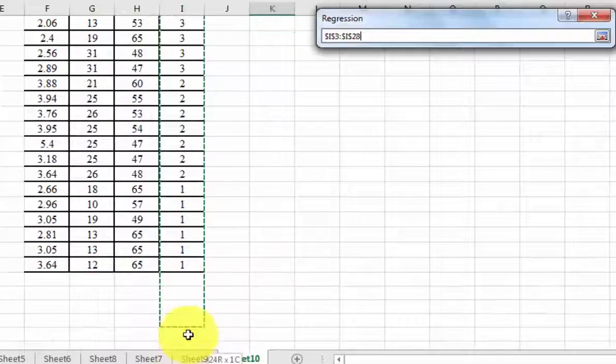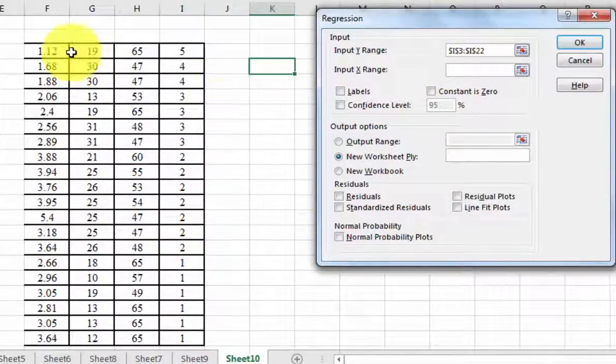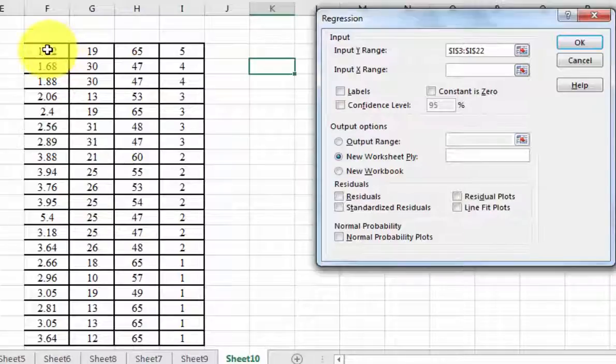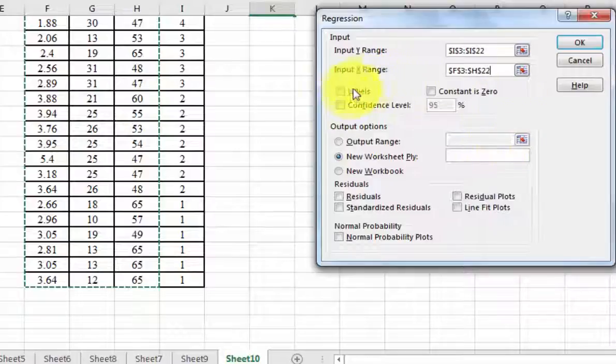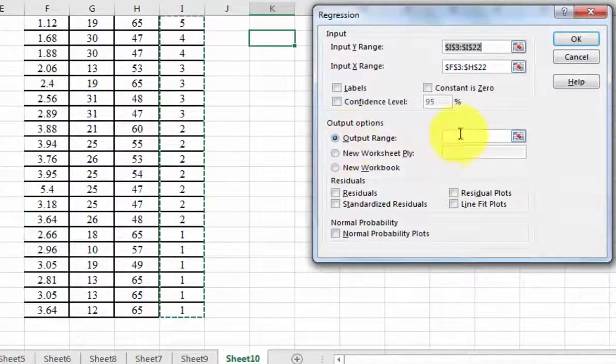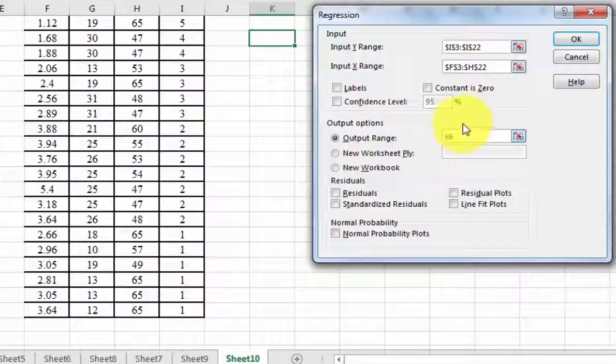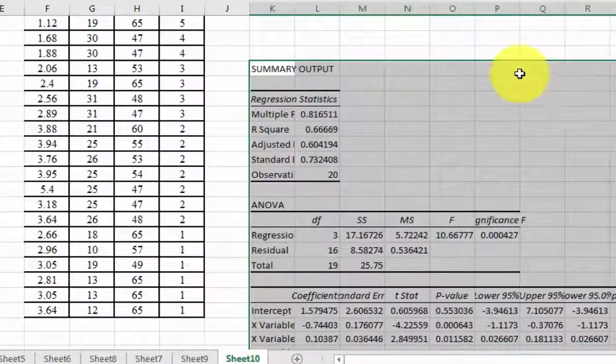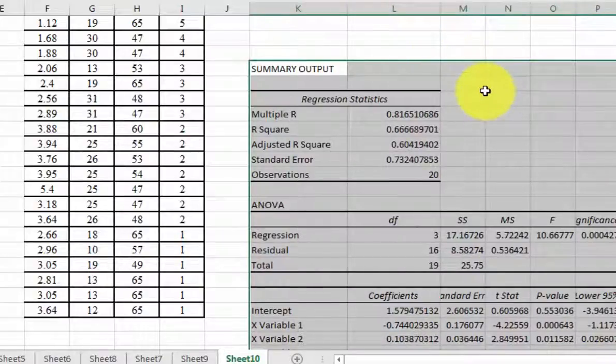Remember, our Y range is what we're trying to predict, and our X range is what we're trying to predict with. I want the output to be right where I can see it, so I'm going to put it right around K6. Am I missing anything? I don't think so. Click OK. So there's our regression table, and it should answer all our questions for us, most of them.